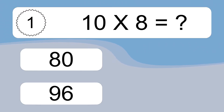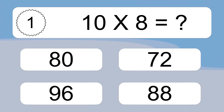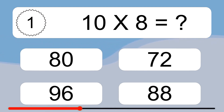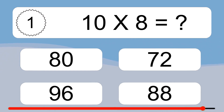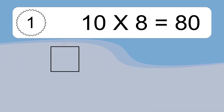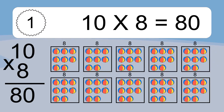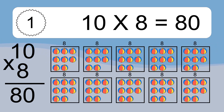10 times 8 equals what? 10 times 8 equals 80. We have 10 boxes, and each box has 8 colorful balls inside. If you count all the balls in all the boxes together, you will have 10 times 8 balls. This equals 80 balls.